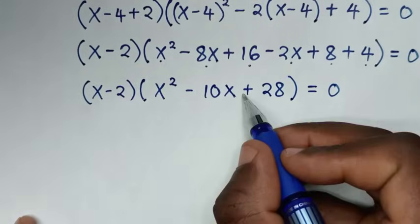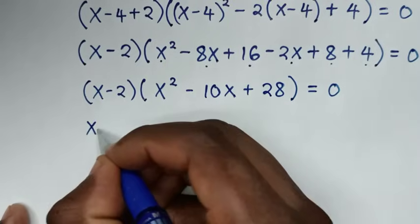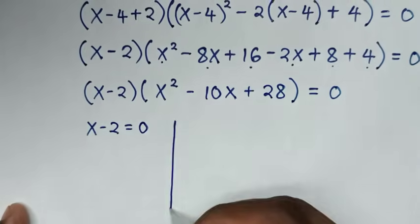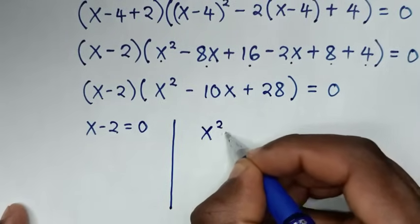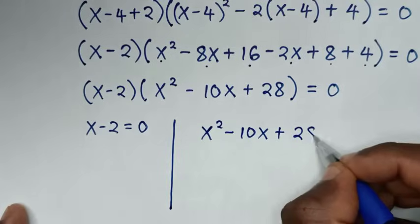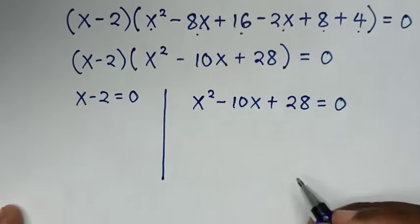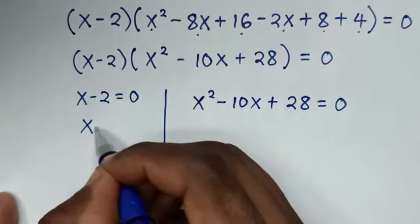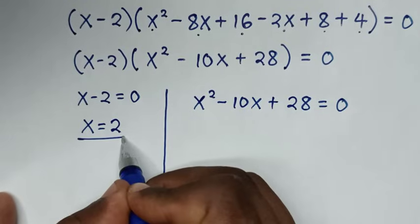From here we have two solutions. The first solution is x - 2 = 0, and the second is the quadratic equation x² - 10x + 28 = 0. From the first, taking -2 to the other side gives x = 2, which is one value of x.